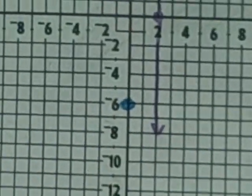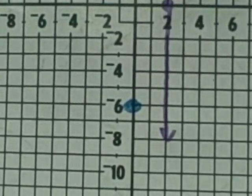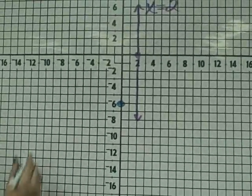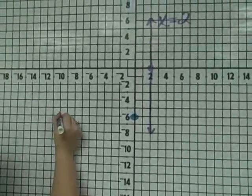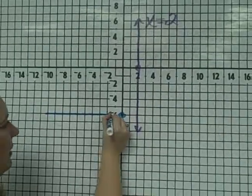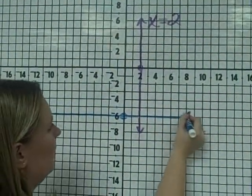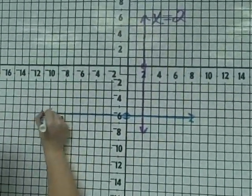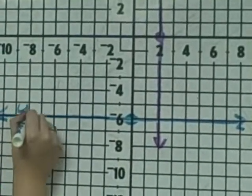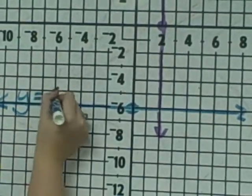And from this dot, we're going to draw a line that crosses the y-axis. So if it's going to cross the y-axis, it's going to make a horizontal line. And that's how you graph the equation y equals negative 6.